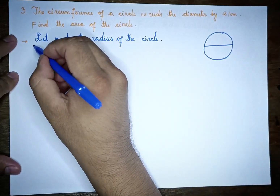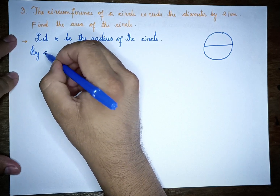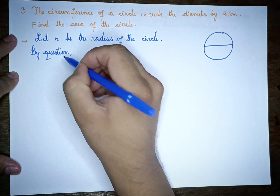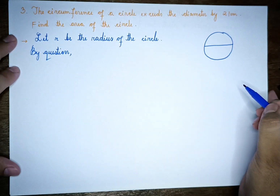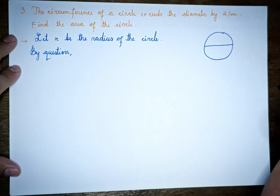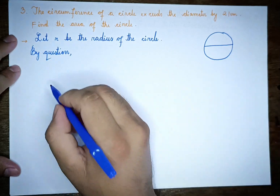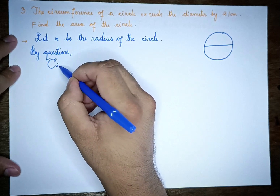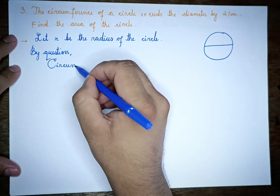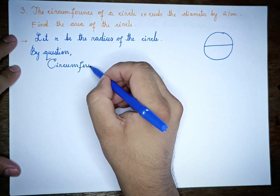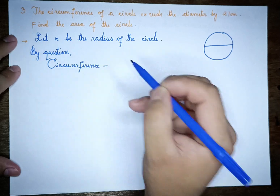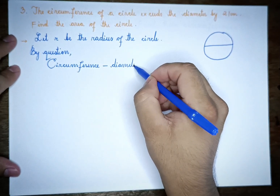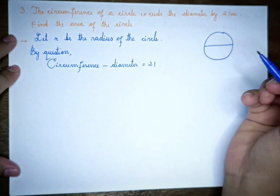By the question, the circumference exceeds the diameter by 21 cm. Setting up the equation: Circumference minus Diameter equals 21.